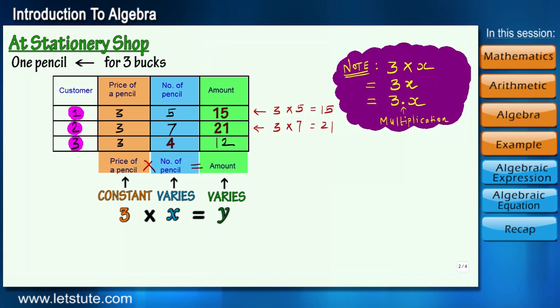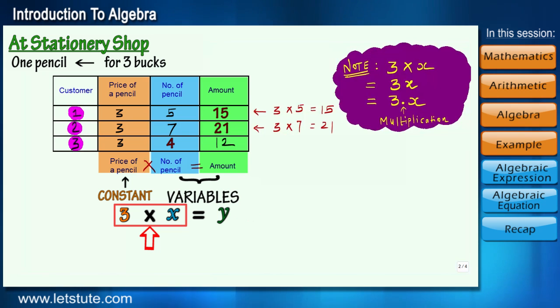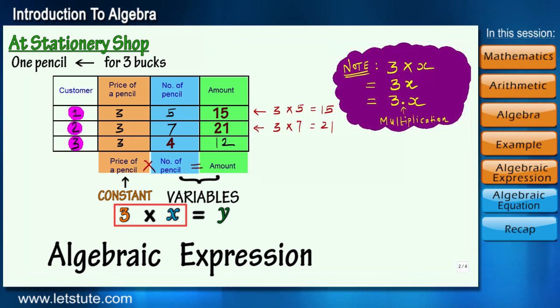Now if we concentrate only on 3x, we can see that we have constant 3 and the variable x, and both are combined with an operation multiplication. So such type of expressions that involve variables and constants combined with the fundamental operations is called an algebraic expression. And also note that when such algebraic expressions are equated, that is we put an equal to sign between them, then this whole thing is called an equation.